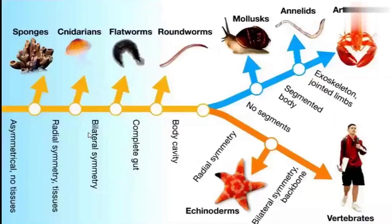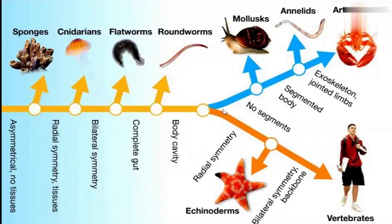This picture shows the starting of evolution. First, asymmetrical tissue — sponges. Radial symmetry tissues — cnidarians. Bilateral symmetry — flatworms. Complete gut — roundworms. Body cavity starts. Echinoderms show bilateral then radial symmetry. Mollusk, Annelida, Arthropoda — with exoskeletons, jointed limbs, and segmented bodies.